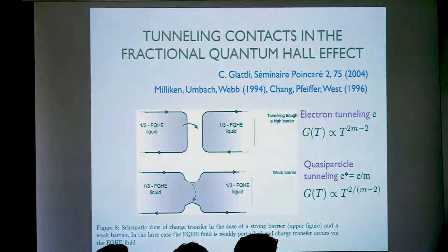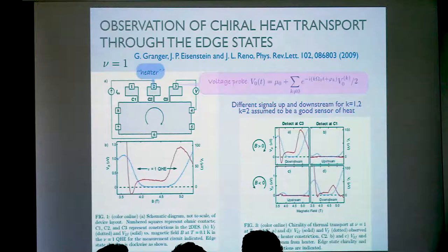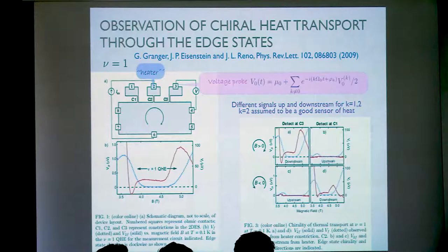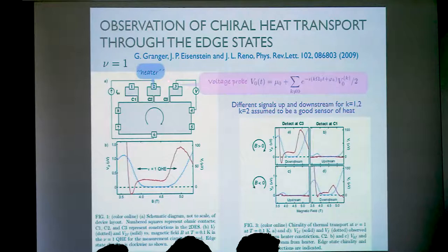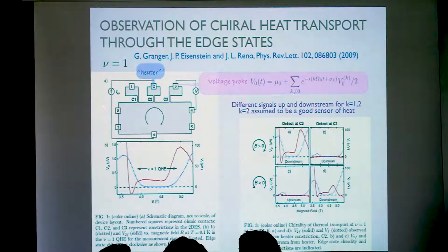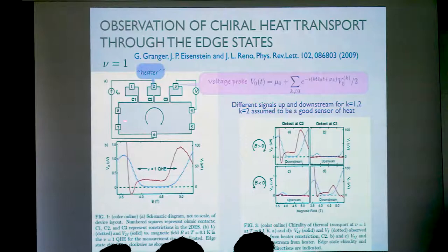Quite recently, people began to explore thermal transport in the quantum Hall regime, and there are some interesting experimental works. I think the first one was performed in the integer quantum Hall regime at filling factor ν = 1. The experiment was devoted to testing that not only charge but also heat propagates chirally along the edge states. In this experiment the edge state is heated at some point and the heat flow is sensed at two different points.